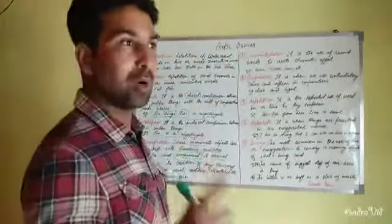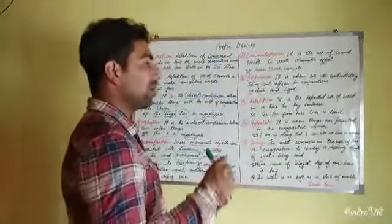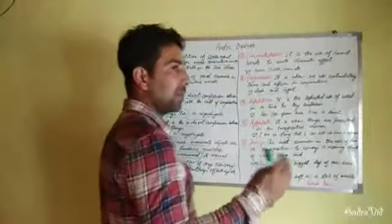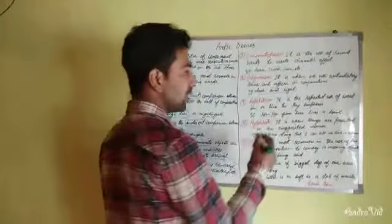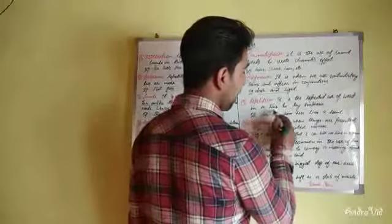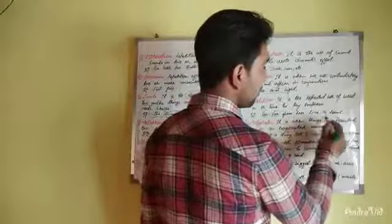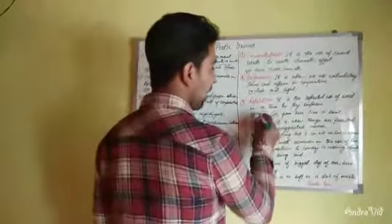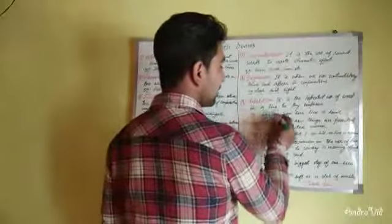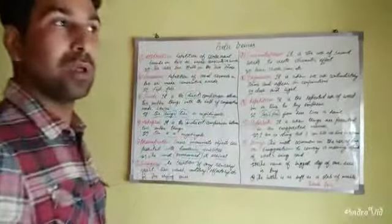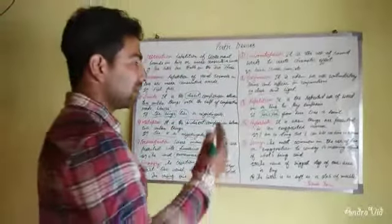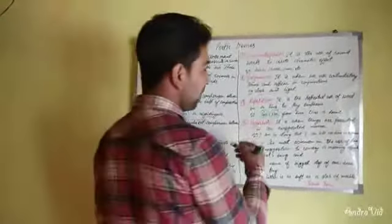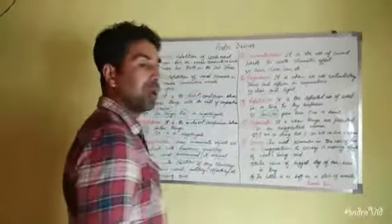Repetition is when a single word is repeated in a line or throughout a poem. For example: 'Far, far from here lives a hermit' — the word 'far' is repeated twice, so that is repetition.